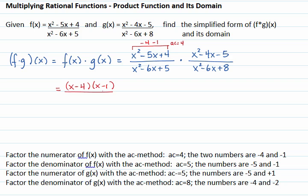We factor the denominator of f with the ac method. ac equals 5. The two numbers that multiply to 5 and add to negative 6 are negative 5 and negative 1. The factorization is x minus 5 times x minus 1.